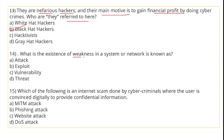The existence of a weakness in a system or network is known as a vulnerability. Which of the following is an internet scam done by cyber criminals where the user is convinced digitally to provide confidential information? This is called phishing. In phishing, you receive emails that appear legitimate or genuine, and they ask for your information. If someone provides their information, their system is compromised.